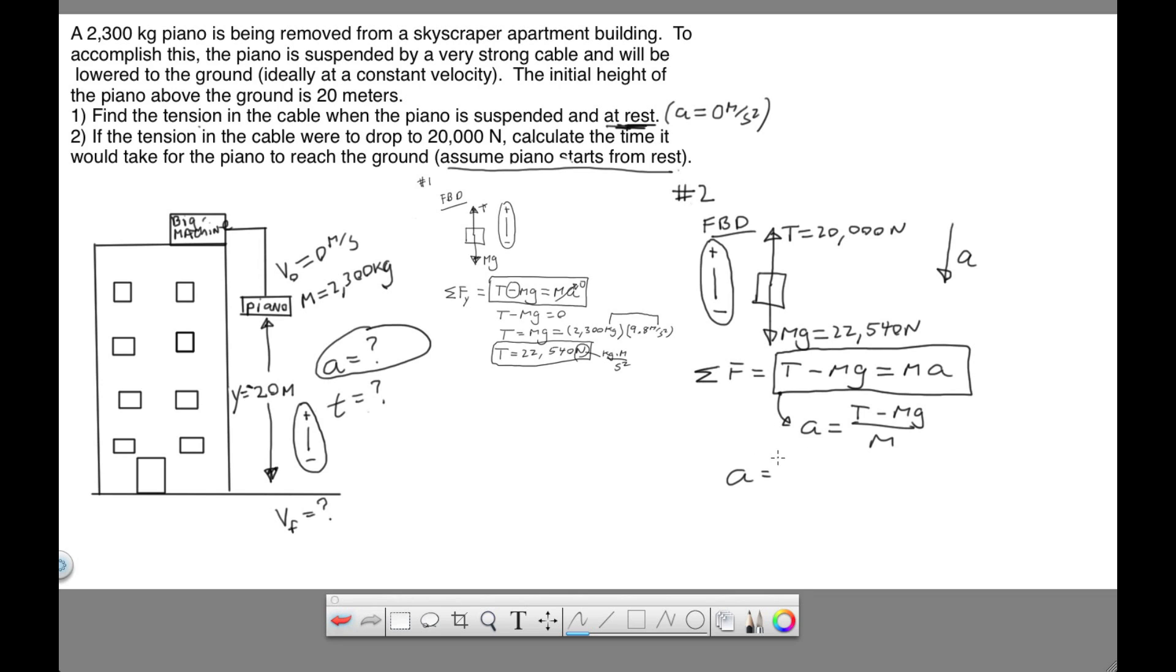So the tension is 20,000. mg is 22,540. And the mass of the piano is 2,300 kg.